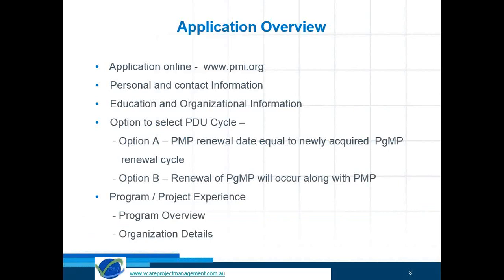For the application overview, you can apply online on PMI.org. You would need to have personal and contact information, education, and your organizational information. If you are already a PMI member, you have the option to select different PDU cycles. If you are not, you don't need to bother about this.